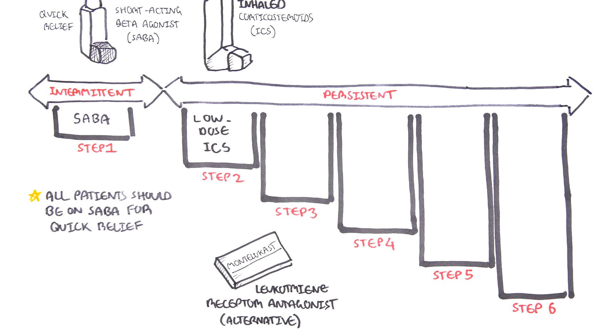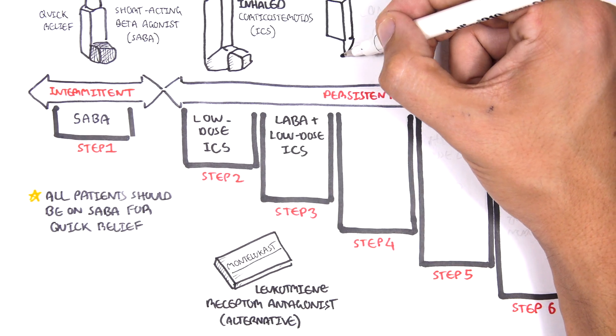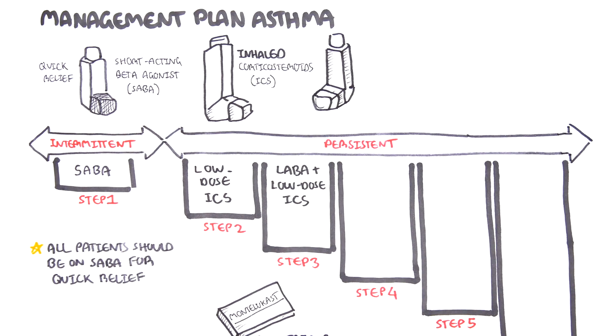Step 3, a long-acting beta agonist can be used together with the low-dose inhaled corticosteroids and the short-acting beta agonist.